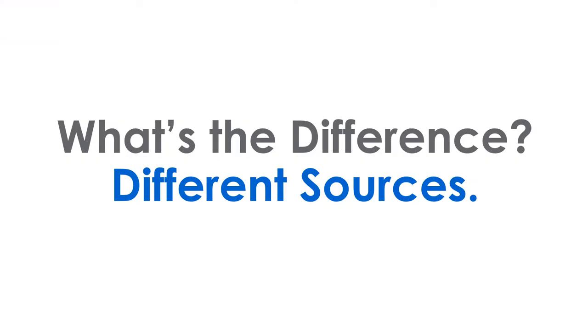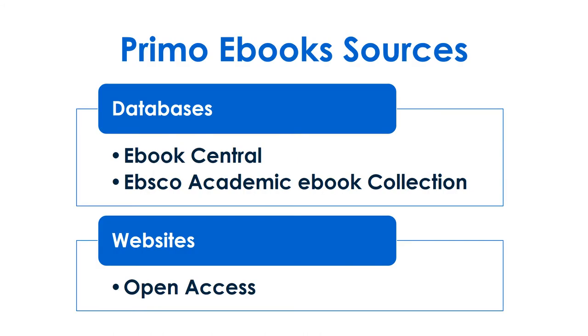What's the difference between the links? Most eBooks in Primo come from the databases eBook Central or EBSCO academic eBook collection. You will also see open access eBooks from quality sources on the web.